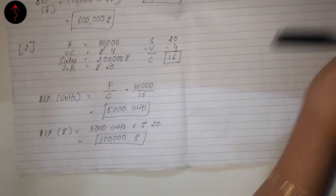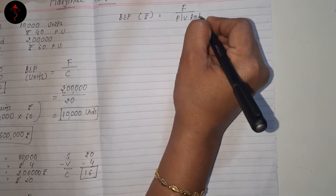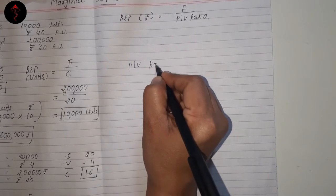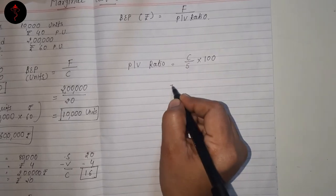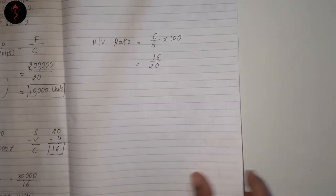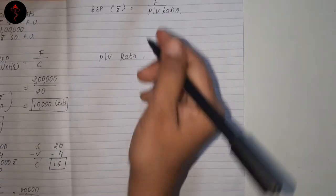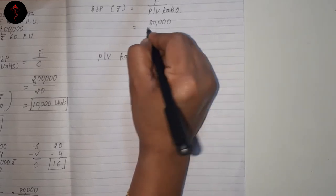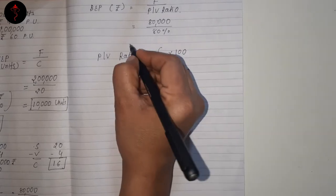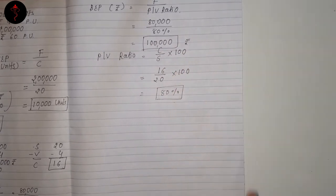Another formula — let's do it over here. BEP in rupees equals F upon PV ratio. First we need to find out PV ratio. PV ratio equals C upon S into 100. Contribution is 16 and sales is 20, so 16 divided by 20 multiplied by 100 — PV ratio is 80%. Fixed cost is 80,000 and PV ratio is 80%, so BEP in rupees is Rs. 1 lakh. You can cross-check: by both methods it is Rs. 1 lakh.